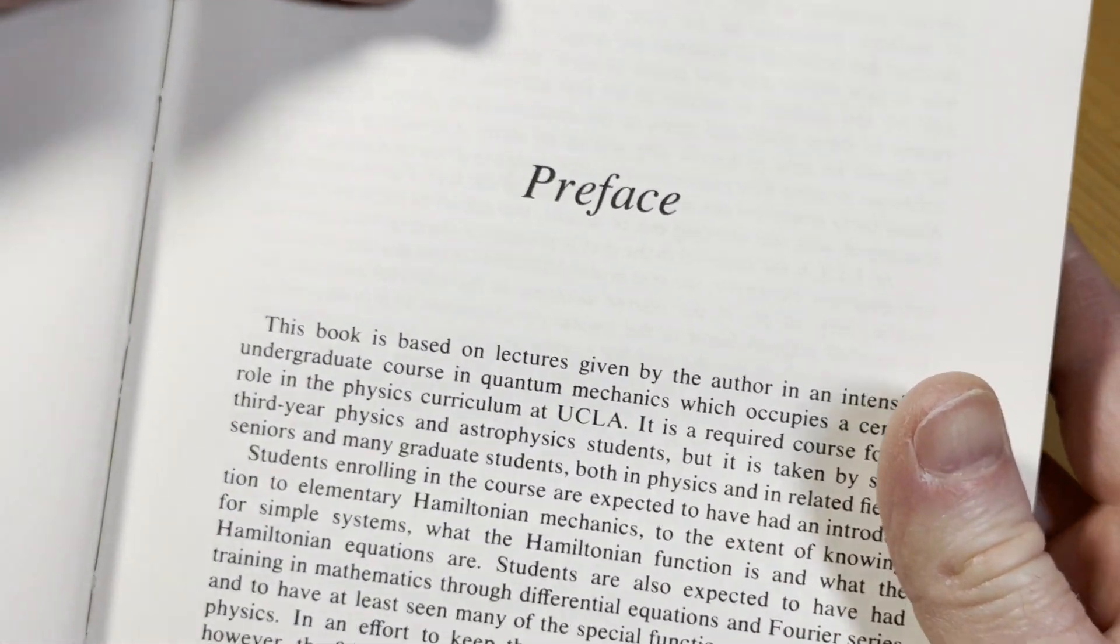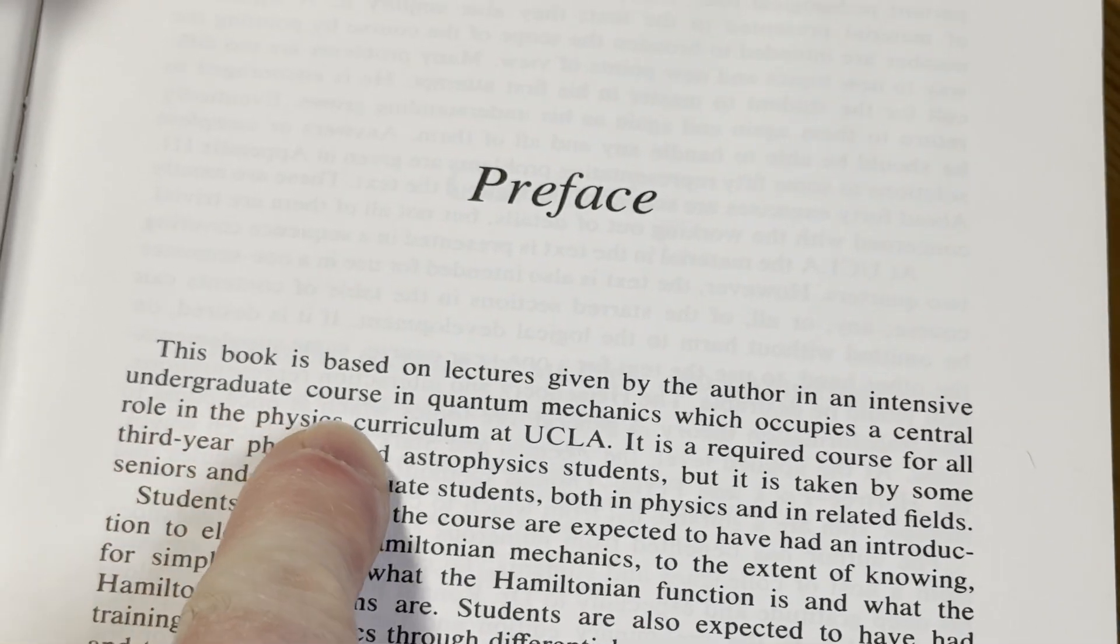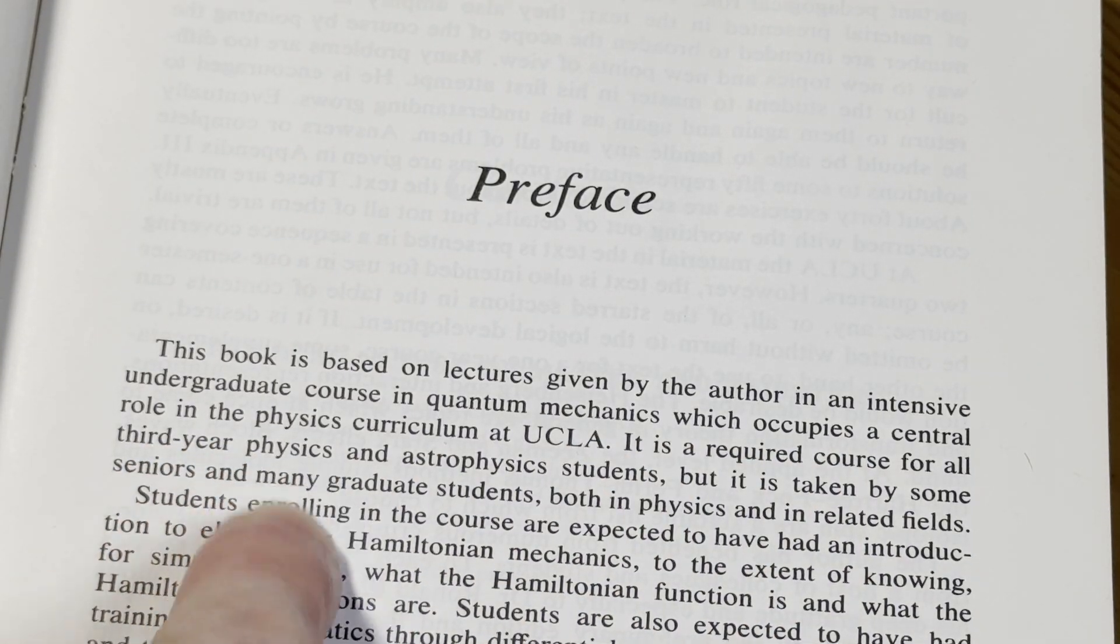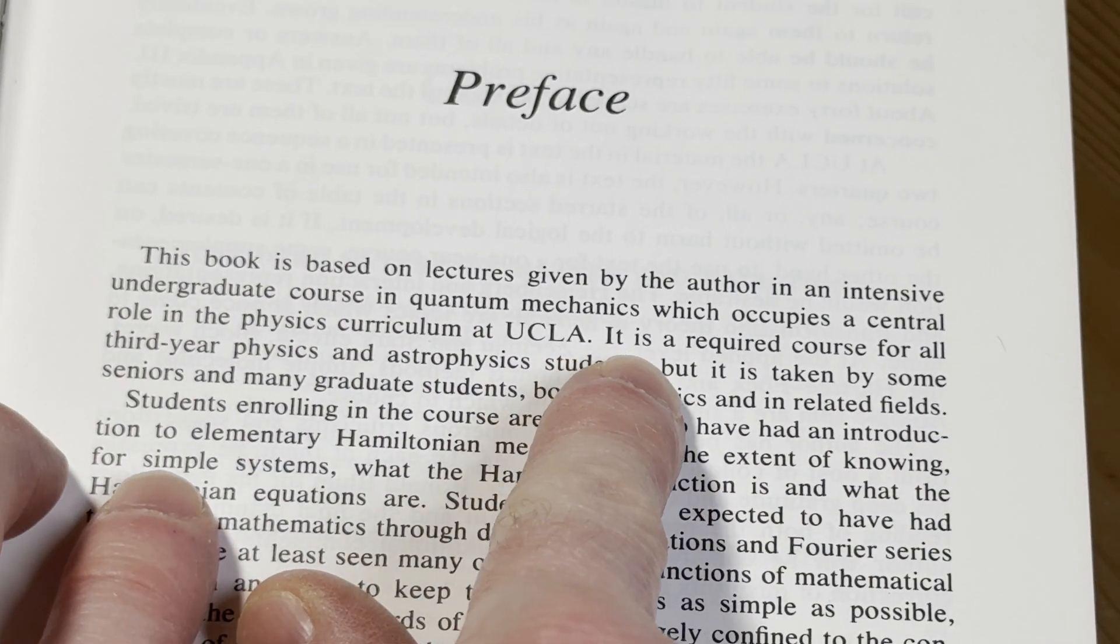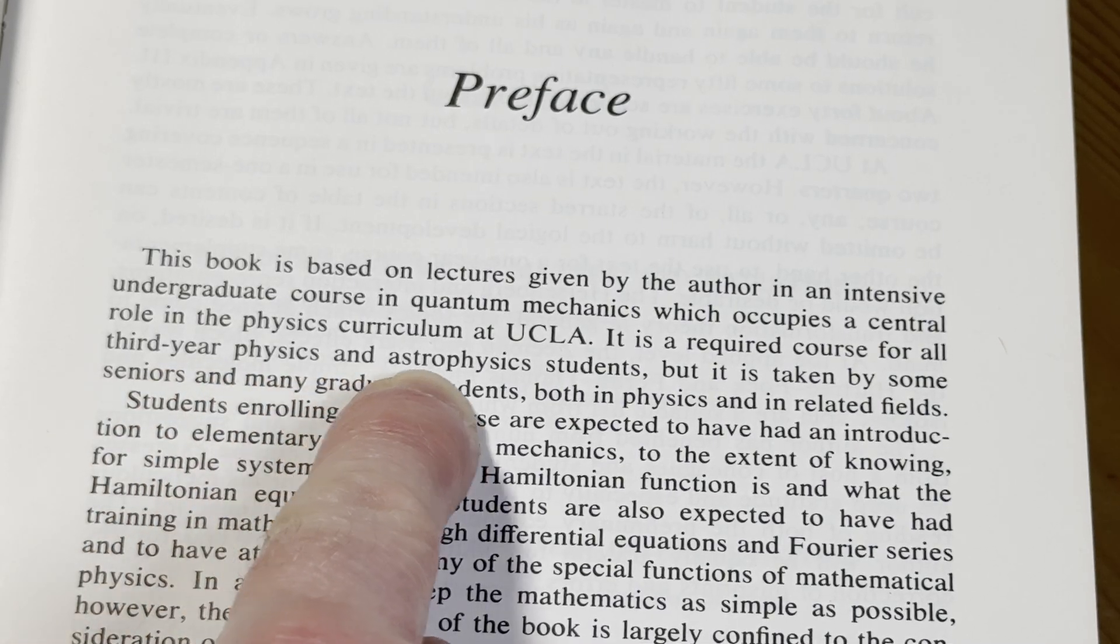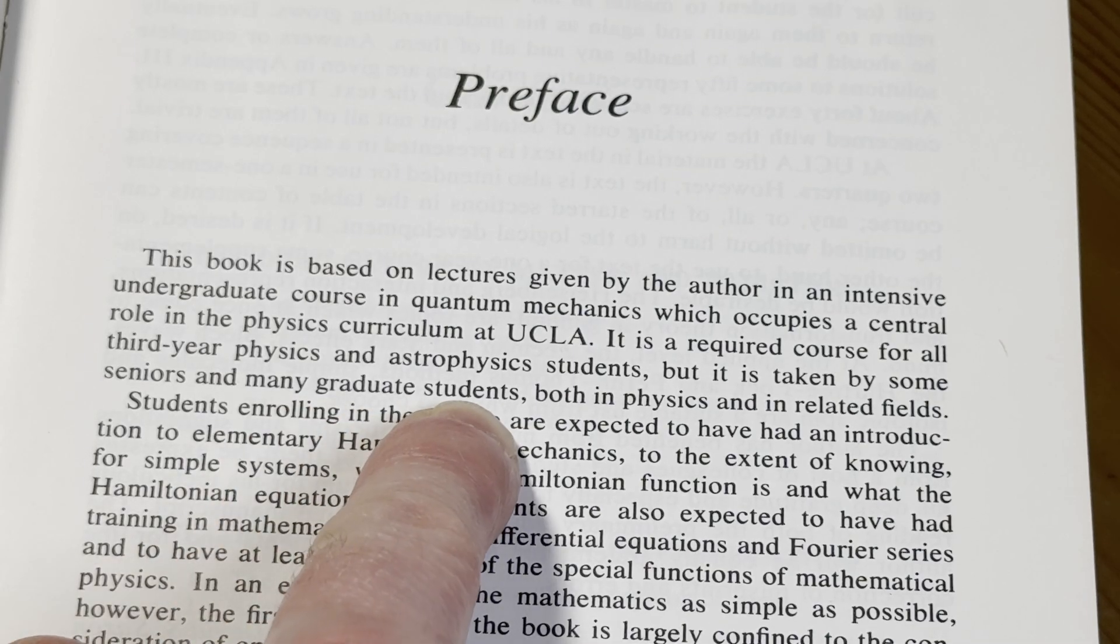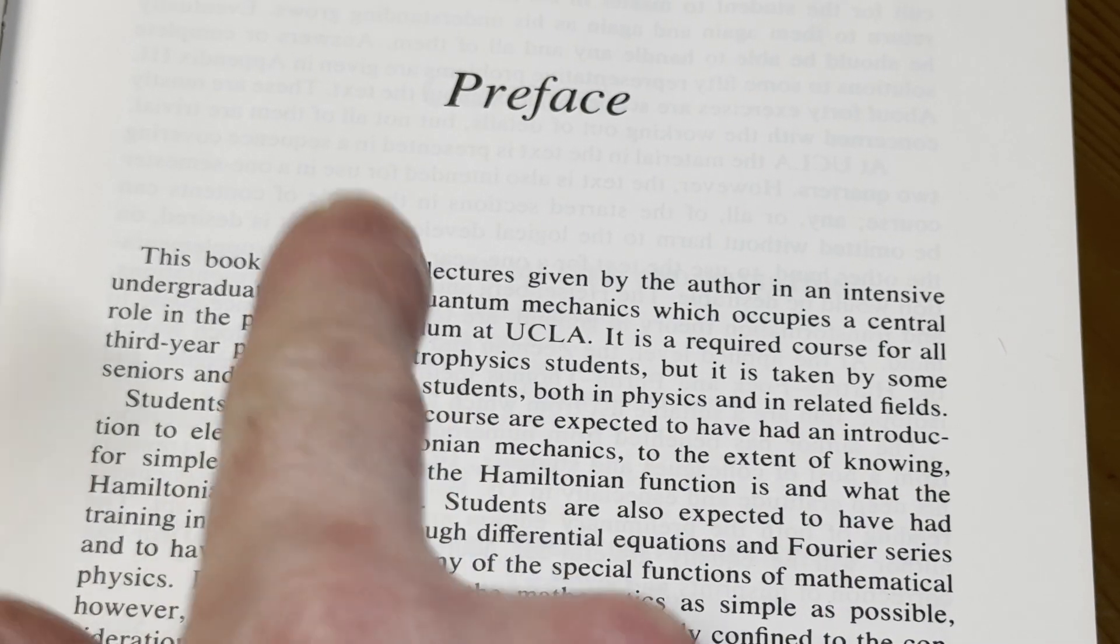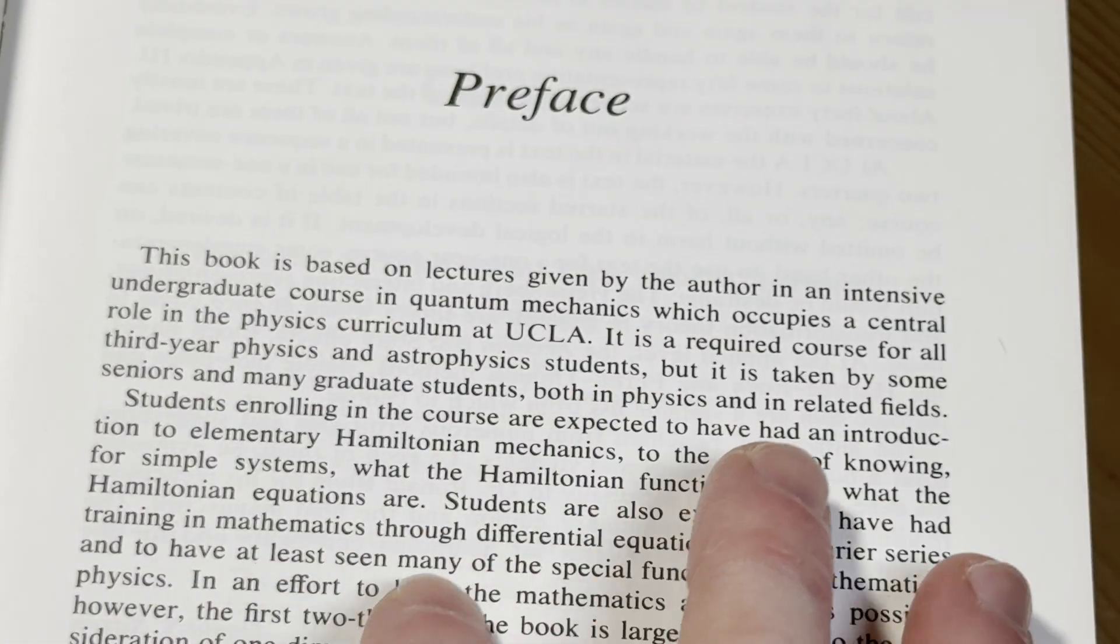This book is based on lectures given by the author in an intensive undergraduate course in quantum mechanics, which occupies a central role in the physics curriculum at UCLA. This is the good stuff here. It is a required course for all third-year physics and astrophysics students, but it is taken by some seniors and many graduate students, both in physics and related fields.